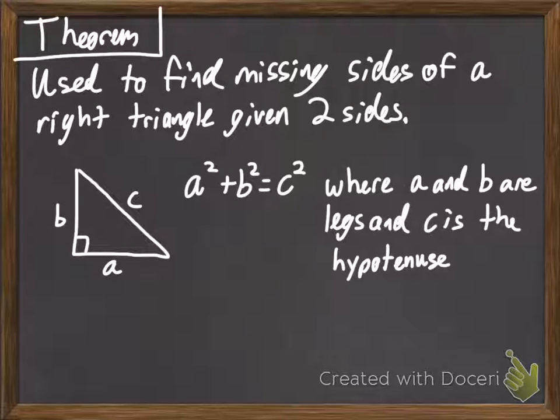The Pythagorean Theorem, simply stated, is used to find missing sides of a right triangle given two sides. We have a right triangle with sides a, b, and c. a and b are the legs of that triangle, and c is the hypotenuse.